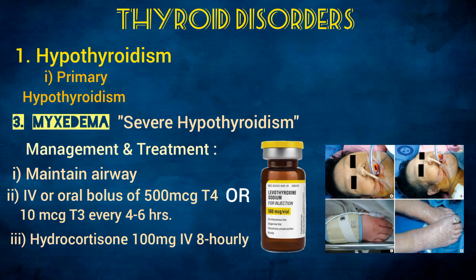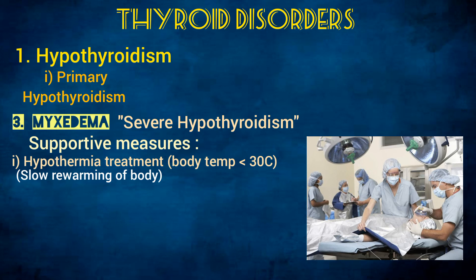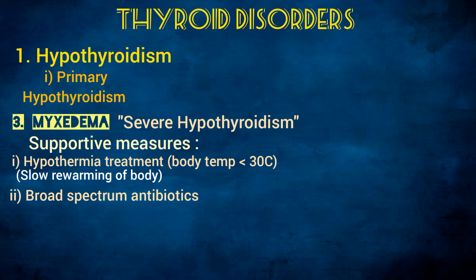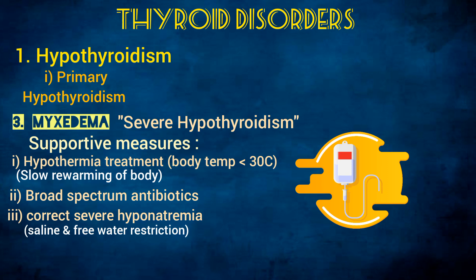Supportive measures include treatment for hypothermia if body temperature is below 30 degrees Celsius, done by slow rewarming using ordinary blankets in a warm room. Associated infection should be treated with broad spectrum antibiotics. Correct severe hyponatremia with saline and free water restriction, and correct hypoglycemia with intravenous dextrose. This was everything about hypothyroidism; other thyroid disorders will be discussed in the next video. Thank you for watching.